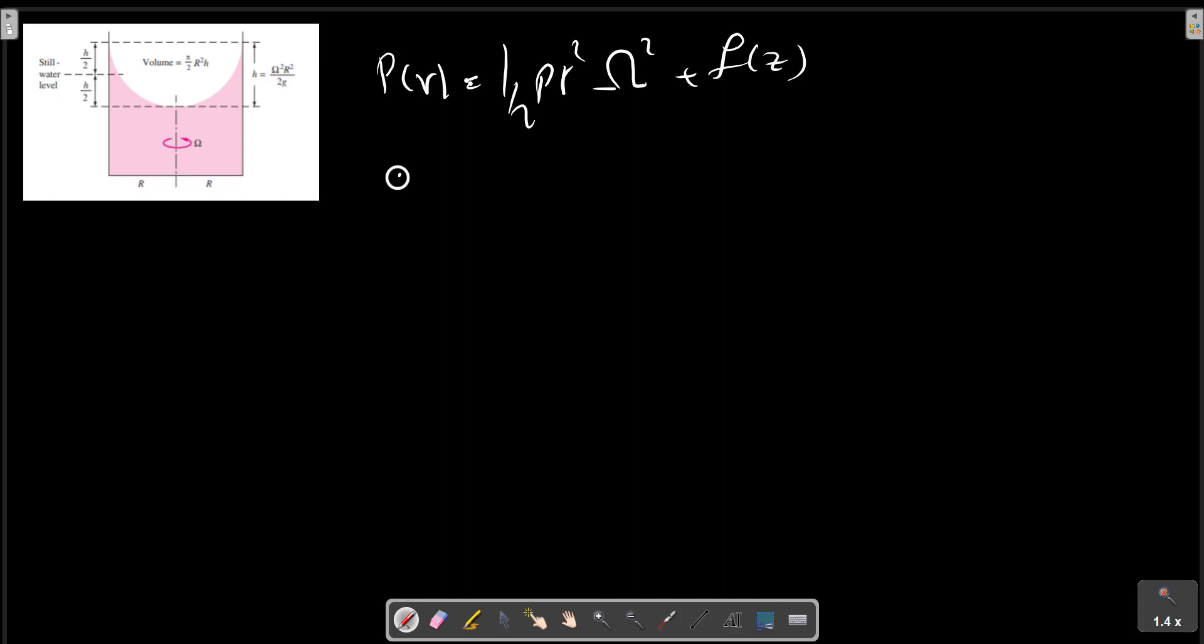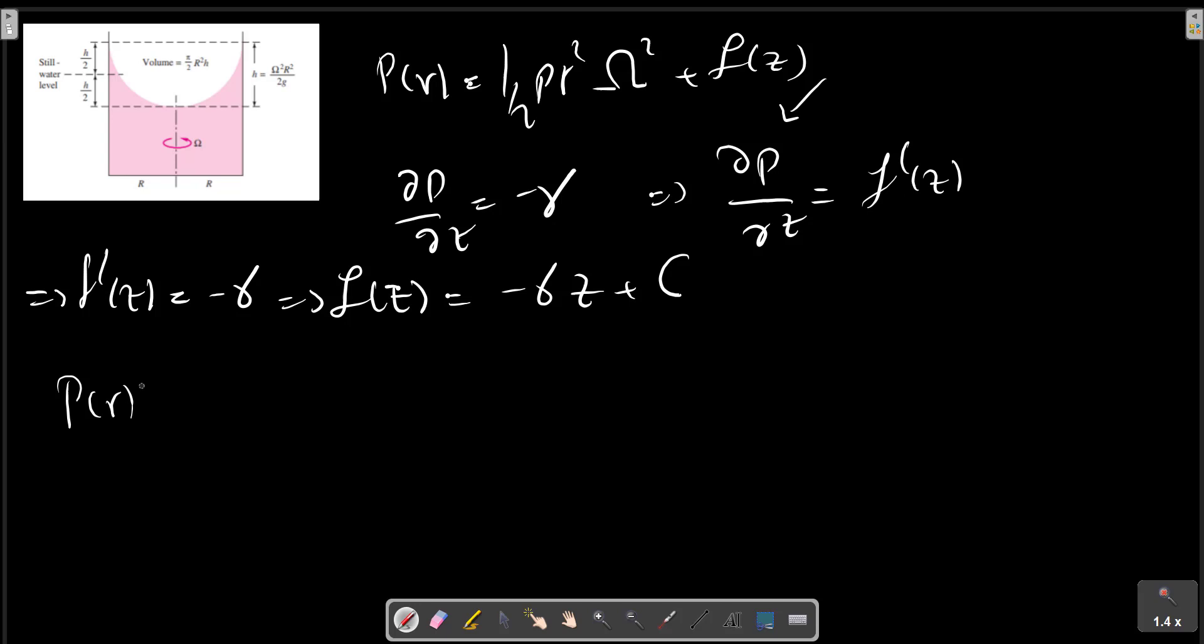We have partial P partial Z equals minus gamma, and F prime of Z equals minus gamma. So F of Z equals minus gamma Z plus a constant. And with replacement in the first equation, we can write the equation as one half rho R squared omega squared minus gamma Z plus C.